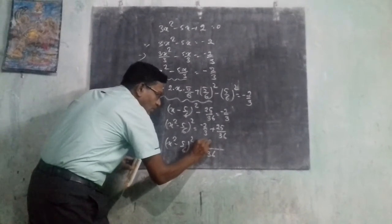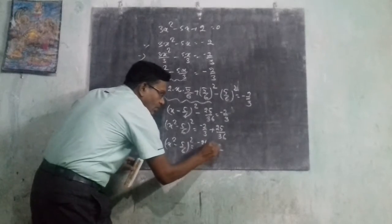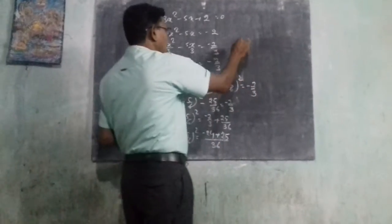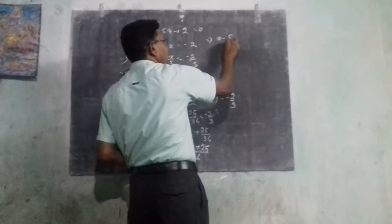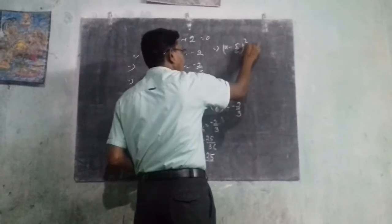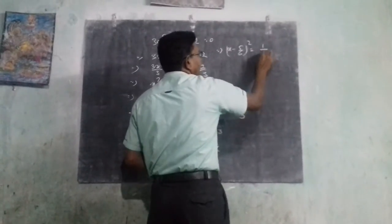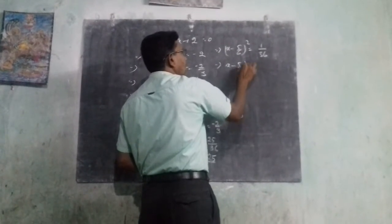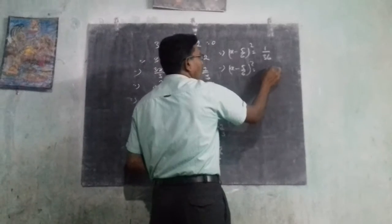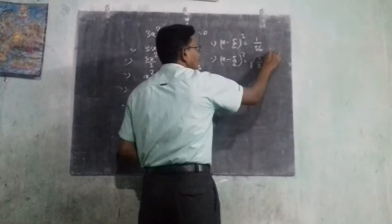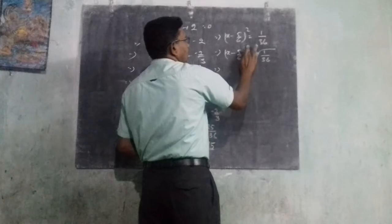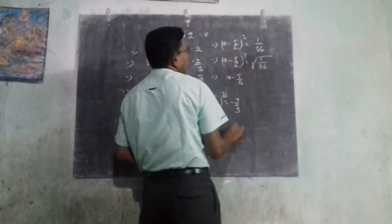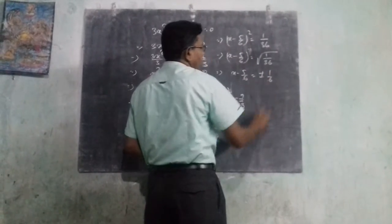12 times 2 equals 24, plus 25, gives 1. So x minus 5 over 6, whole squared, equals 1 over 36. Now taking the square root: x minus 5 over 6 equals plus or minus 1 over 6.